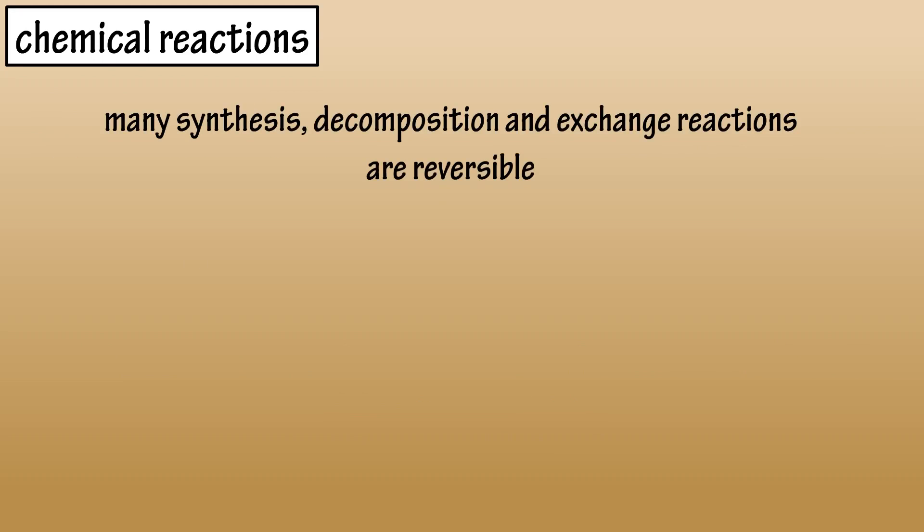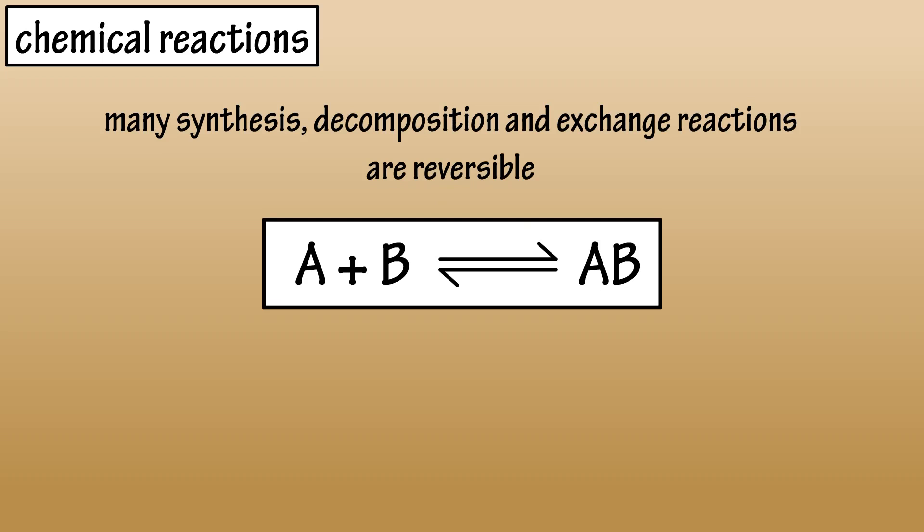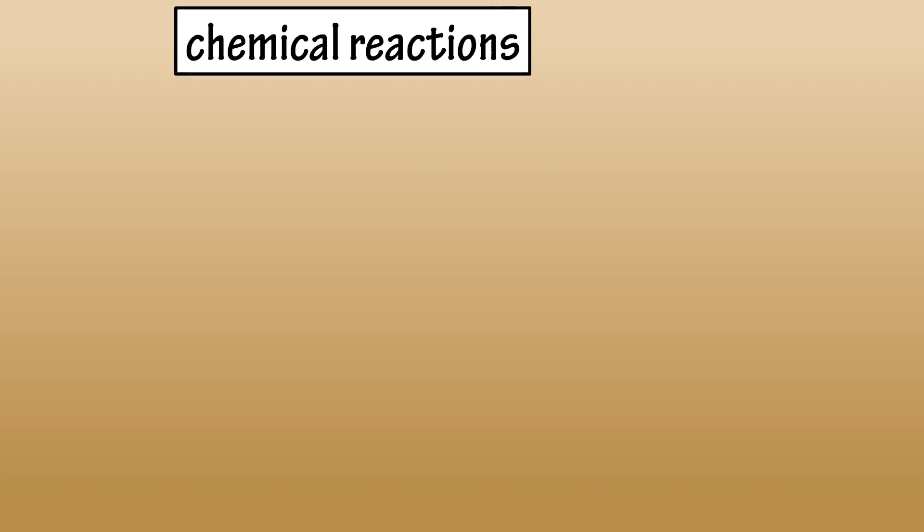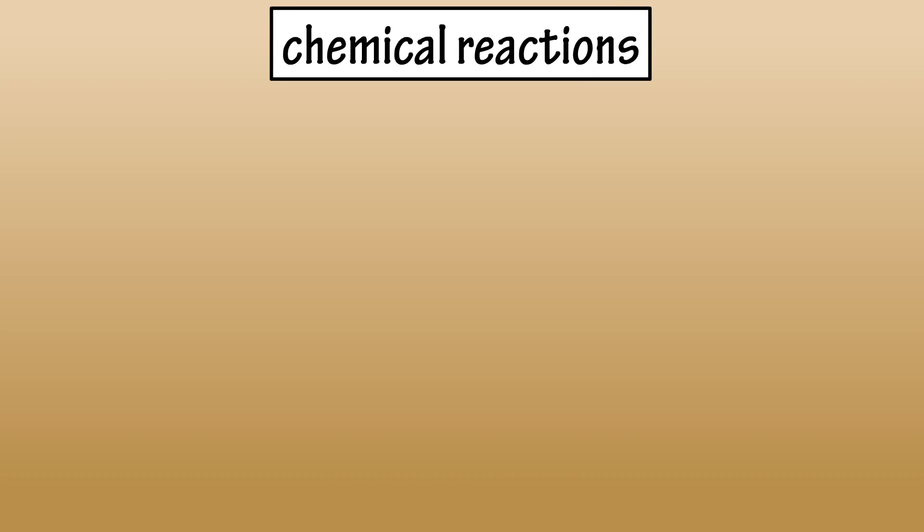Many synthesis, decomposition, and exchange reactions are reversible reactions, meaning that they can proceed in both directions. This is often written as A plus B, with an arrow pointing in both directions, and AB. And that would be the basics on chemical reactions.